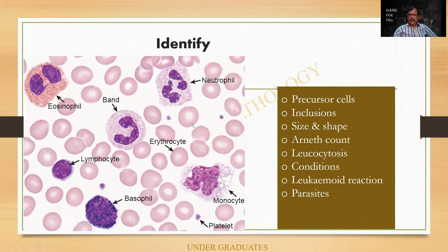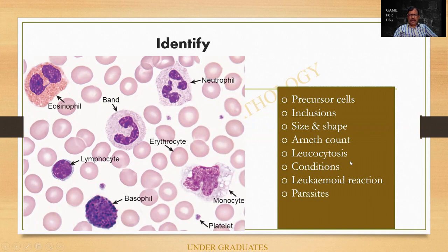Identification of the cells I have already explained — go through it once again. What are the precursor cells? Arneth count is sometimes asked — it depends on the number of segments: two, three, four, or five. It is almost rudimentary and not used nowadays, but some examiners ask. It is a count based on the number of segments. Leukocytosis is an increase — what are all the conditions where it can be present? What is a leukemoid reaction? It mimics a leukemia. I have clearly explained the difference between leukemia and leukemoid reaction in my one-page book.